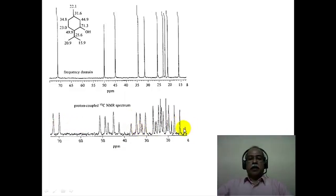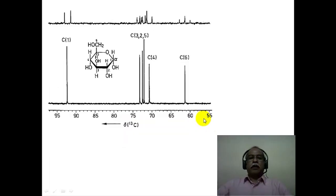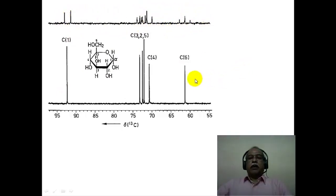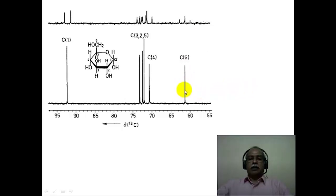One can analyze the gated decoupled spectrum, although it is fairly complex, to obtain individual carbon-hydrogen coupling constants. For glucose, the broadband decoupled spectrum shows clean single lines at the bottom, while the top proton-coupled trace shows C–H splitting. When a carbon signal is split into a triplet (as for CH₂OH), the intensity of each peak drops considerably because the intensity is distributed across the triplet.